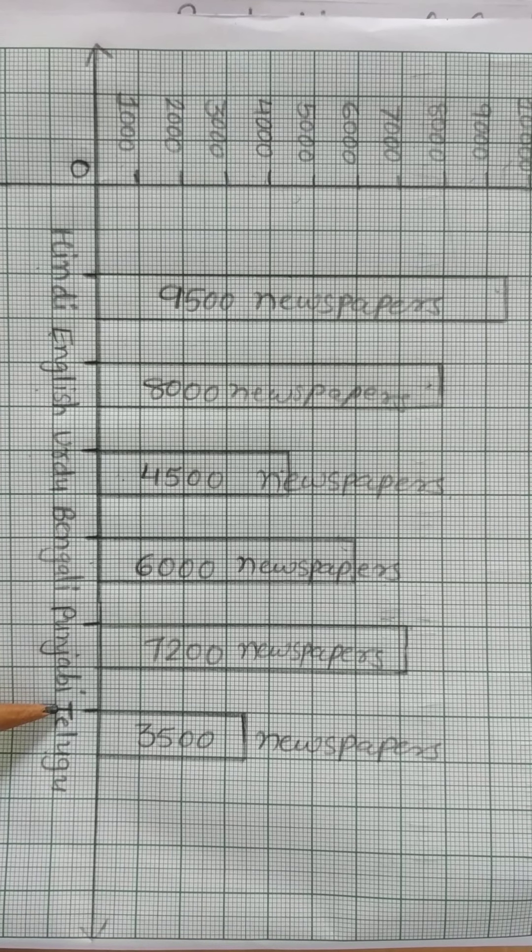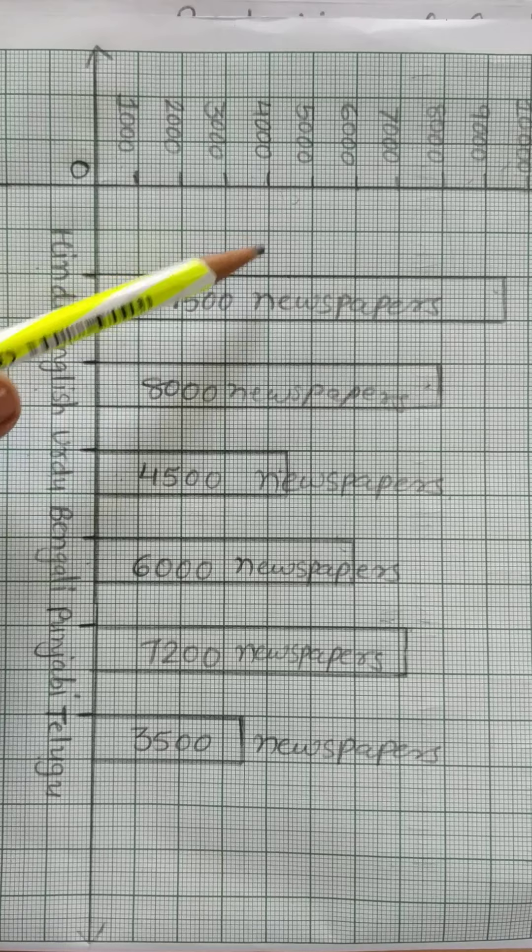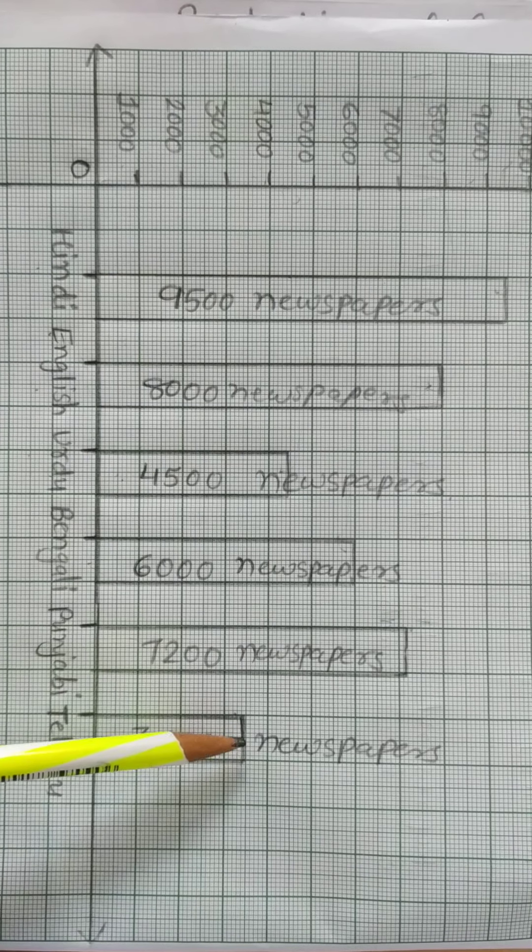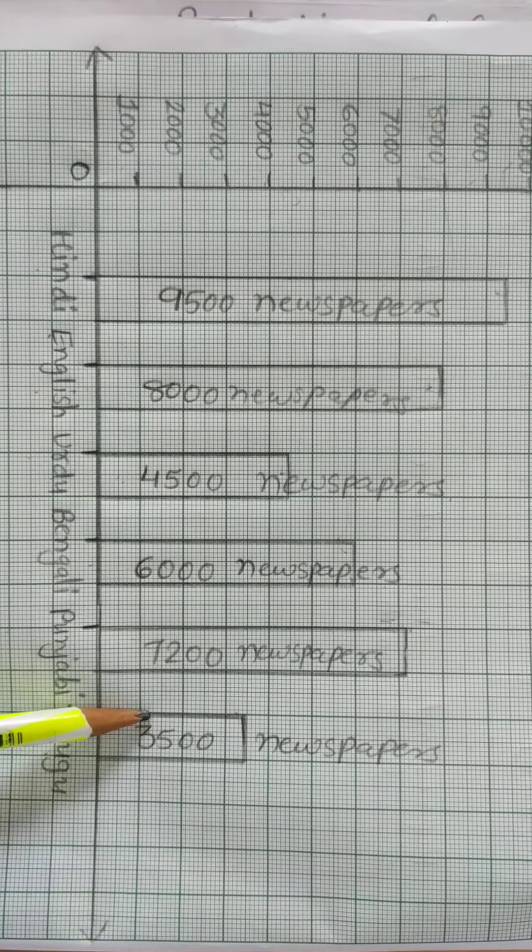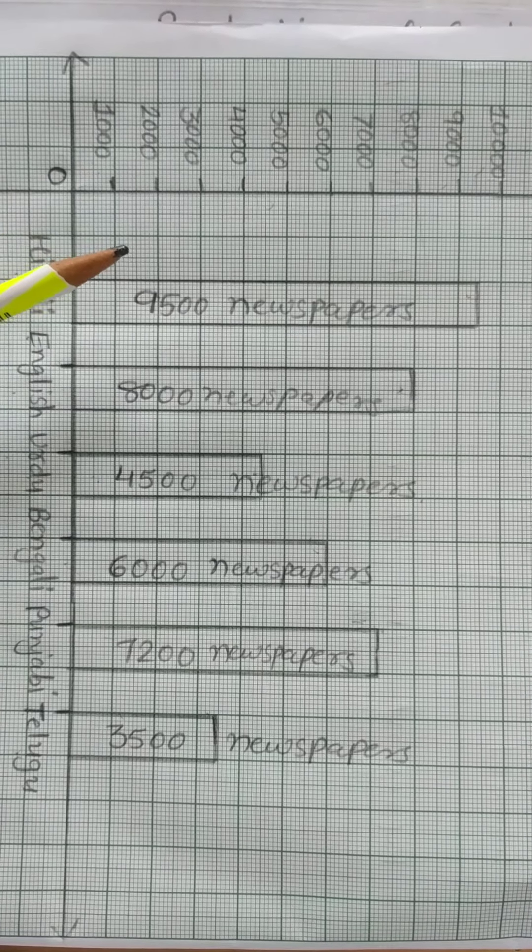For Telugu 3,500, so between 3,000 and 4,000. So here that bar will be made for 3,500. For Telugu 3,500 newspapers. So this way your graph is made.